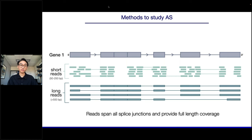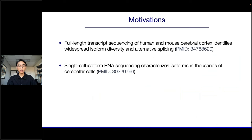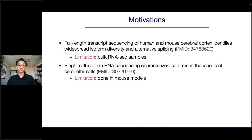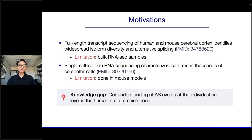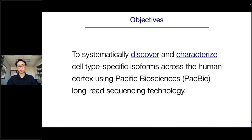Two previous studies utilized long-read sequencing to study isoforms in the brain, but with two limitations: one used bulk RNA-seq, which doesn't fully capture isoforms at the single-cell level; the other was done in mouse models, not human brains. The main knowledge gap is that our understanding of alternative splicing events — including their expression and usage at the individual cell level in the human brain — remains poorly understood. Using long-read sequencing from PacBio, the objective was to systematically discover and characterize cell-type specific isoforms across the human cortex.